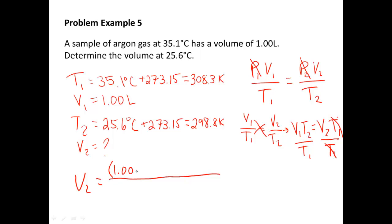That's 1.00 liters times, make sure you get the right temperature, V1 T2. So, that means it's the 298.8 Kelvin. And that is divided by 308.3 Kelvin. Our Kelvins cancel out. And we, let's see how many sig figs. Three significant figures. That gives us 0.969 liters.